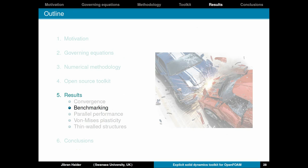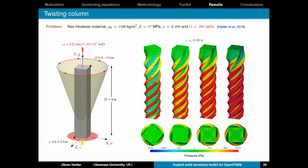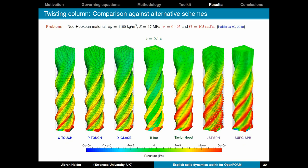Next, we will benchmark this twisting column problem. So you have a column fixed at the bottom and free on all other sides. And you initialize with an initial angular velocity field. And you can see the highly nonlinear deformation of the column. And as you refine the mesh, you can see the deformation is fairly similar. But of course, you have a better pressure distribution. And here it's a comparison against alternative schemes. So the first three schemes are the ones I have shown you in this presentation. The in-house implementation in OpenFOAM. The other two are well-known finite element schemes. The B-bar method and the Taylor-Hood Q2Q1 element. And the last two are in-house particle method implementations with GSTSPH and SUPGSPH. So all of them show very good comparison in terms of deformation and also pressure distribution.